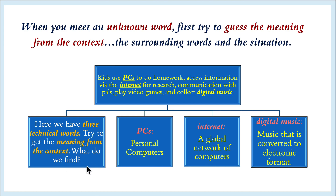What do we find? We find PCs, internet, and digital music. So PCs refers to personal computers; internet is a global network of computers; digital music is music that is converted to electronic format.